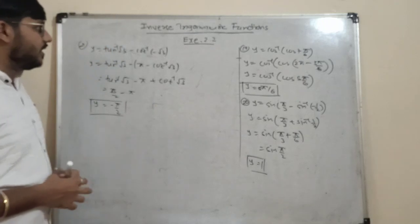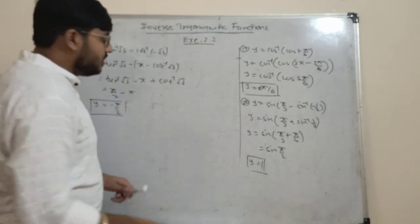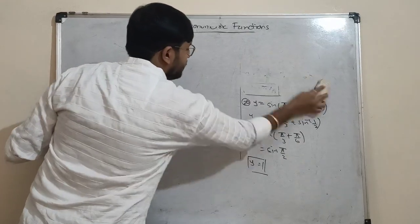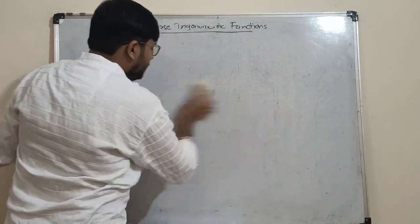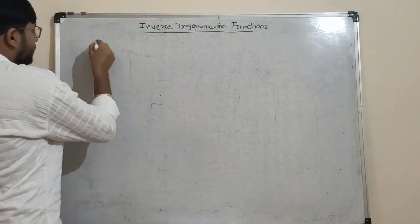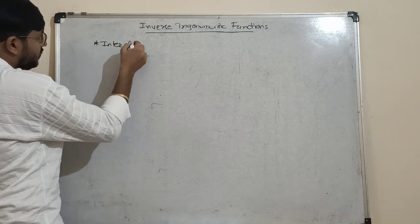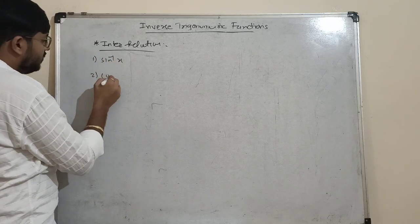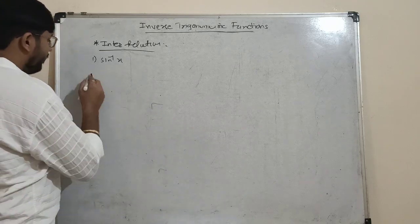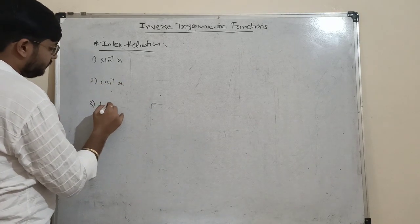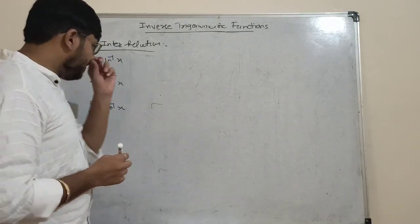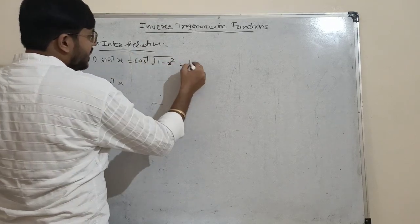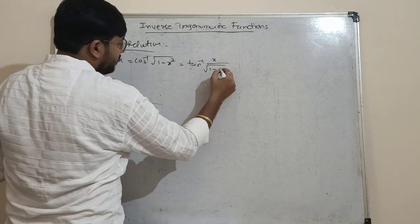That is the end of exercise 2.2. Let us discuss one theoretical point on interrelation that will help with MCQs. sin⁻¹x can be written as cos⁻¹(√(1-x²)) and also as tan⁻¹(x/√(1-x²)).